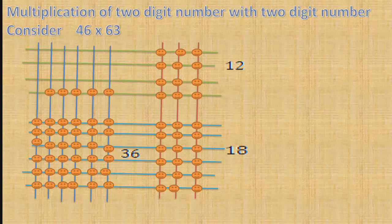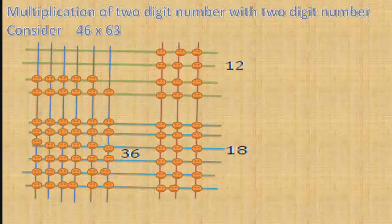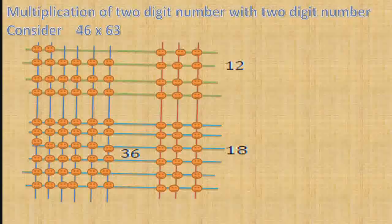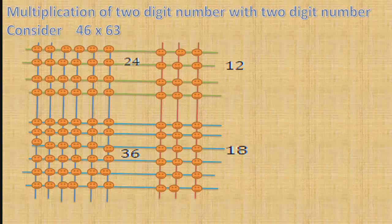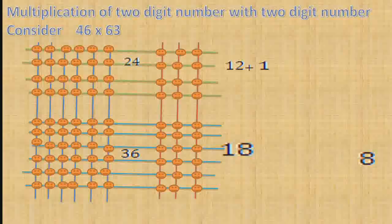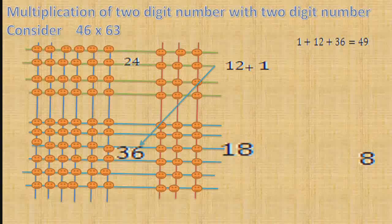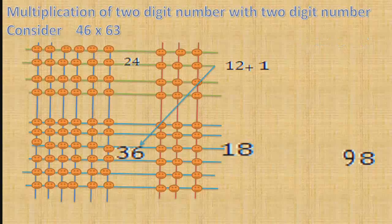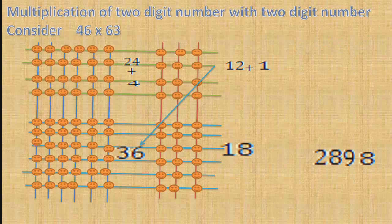The last region gives 24, write 24. Starting from the right bottom corner, the number is 18 — write 8 in the answer and take 1 as a carry. Add 12 plus 1 plus 36, that is 49. Write 9 in the answer and take 4 as a carry. Then 24 plus 4 is 28. Therefore, 46 multiplied by 63 equals 2898.